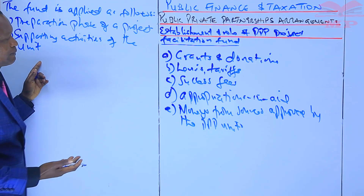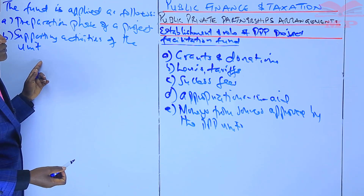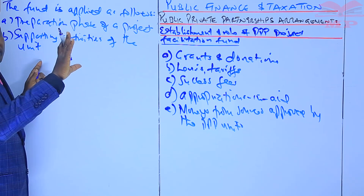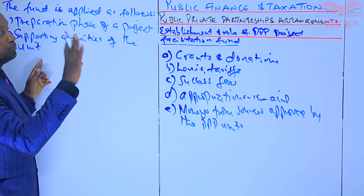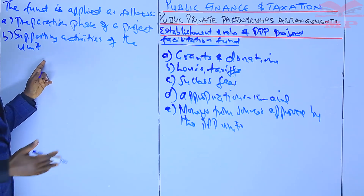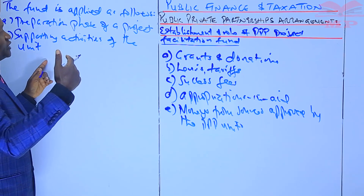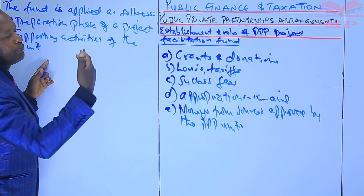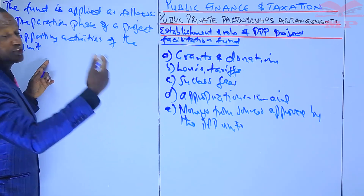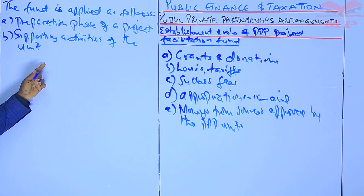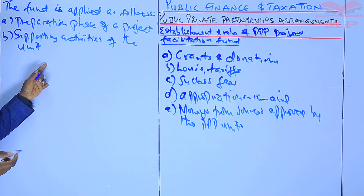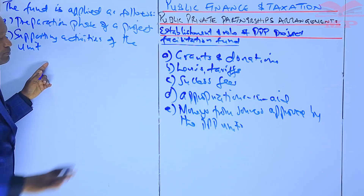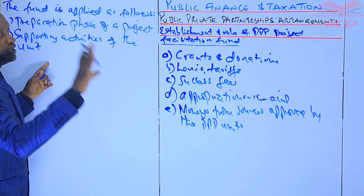The fund is also applied in supporting the activities of the PPP unit. Earlier we highlighted more than 15 functions of the PPP unit. Those functions are supported by the PPP Project Facilitation Fund — money is needed for those activities, and it comes from this fund.